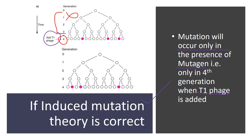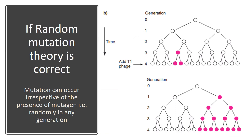Mutation can only occur in the fourth generation, and in both experimental sets the mutation is occurring in the fourth generation. The rate of mutation also remains the same — if three cells are mutated in one set, then when the same experiment is run again, three cells will again be mutated. So if the rate of mutation remains the same across sets, I would conclude that the induced mutation theory is correct.